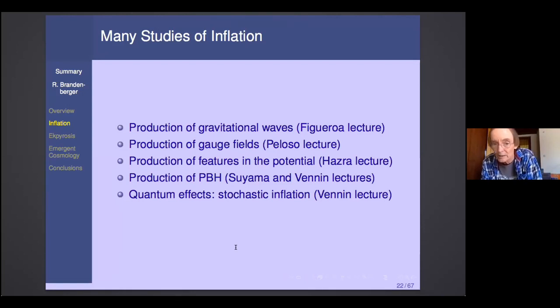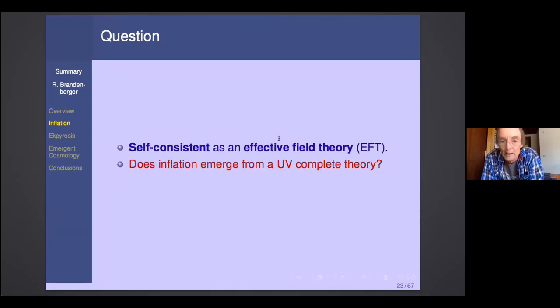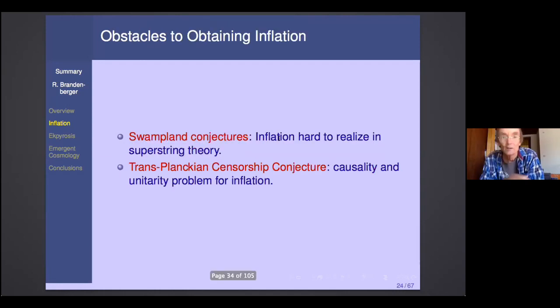So now in the context of inflation, you can do many studies. We heard a lot about gravitational wave production, gauge field production, features in the potential that can be induced, primordial black holes and stochastic effects. And in principle, all of these issues could be studied in alternatives to inflation. But I want to turn to the question whether inflation can actually emerge from a ultraviolet complete theory. No doubt inflation is self-consistent as an effective field theory.